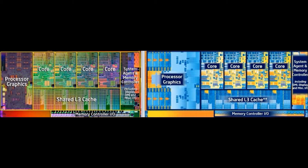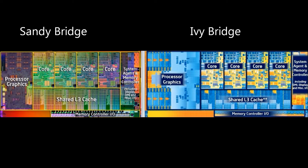Ivy Bridge is based on the Sandy Bridge architecture. This means that the building blocks that make up both lines of CPUs are very similar, and you can see that here. For example, the actual arrangement of the cores, the shared L3 cache, and even the memory controller are very similar.